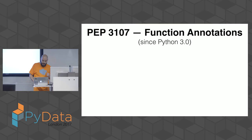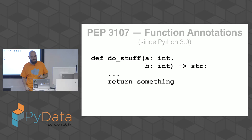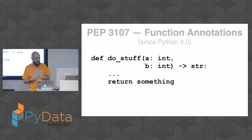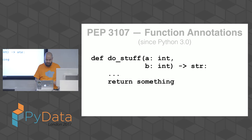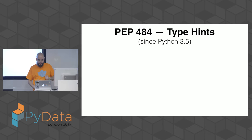In Python, since Python 3.0 — more than ten years ago — we have function annotations. For example, a function can declare the expected data types for its arguments, say two integers, and with the arrow syntax declare the return type, such as a string. However, annotations are ignored by the interpreter — the syntax is legal but the interpreter does nothing about it.